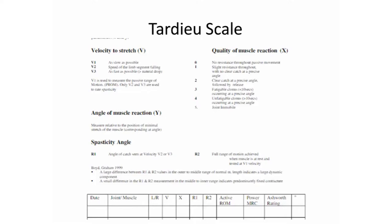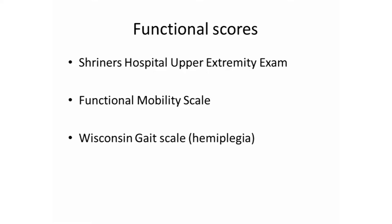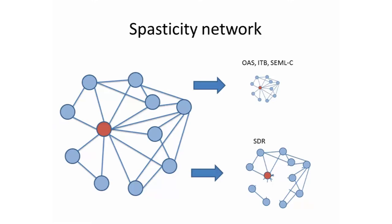In such a fine-tuned scale, you can measure response to treatment. But if you really want to see how spasticity affects a person, you need functional scales — that's where the Shriners Hospital upper extremity exam, functional mobility scale, and Wisconsin gait scale come in. These scales help us understand how our patient's quality of life has improved. When you look at spasticity, it's basically a network that feeds itself — the components make spasticity manifest or diminish, and spasticity can feed the subcomponents.